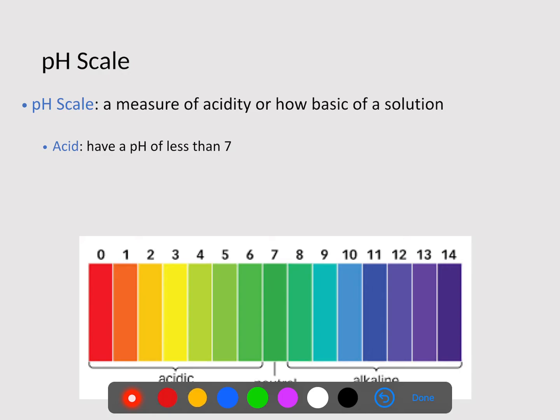Now, the pH scale is a measure of acidity or how basic a solution is. Acids have a pH that is less than seven. So anything from just below seven all the way to zero are acidic things. Now, basic things are anything that has a pH above seven. So anything from seven to 14 are considered basic solutions.